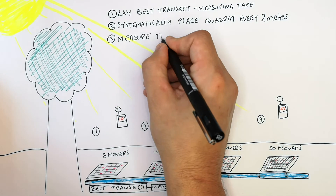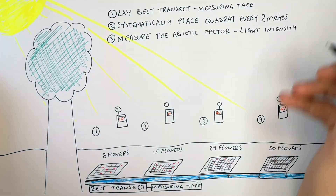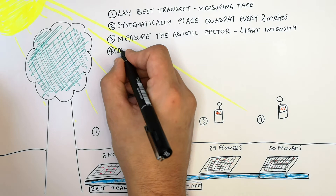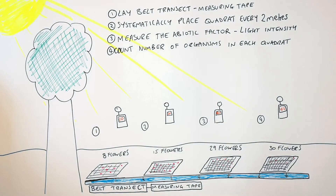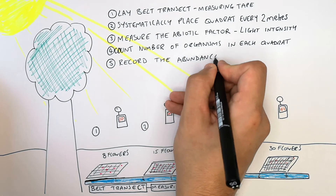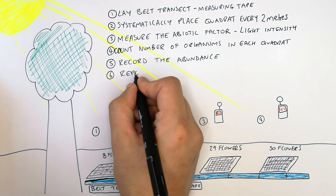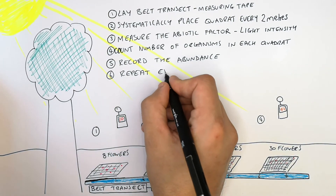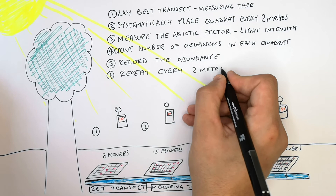You then measure the abiotic factor — in this case it was light intensity. Then count the number of organisms in each quadrat, recording the abundance. You then lay the quadrat at regular intervals along the belt transect — in our case it was every 2 metres.